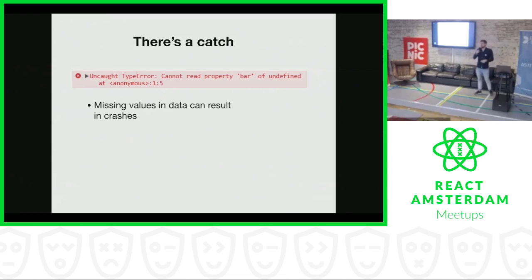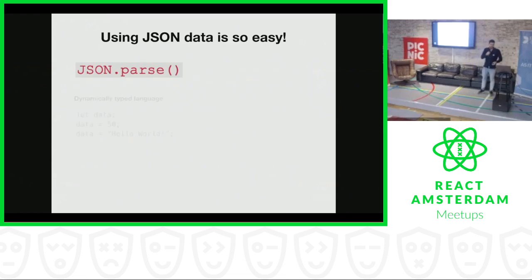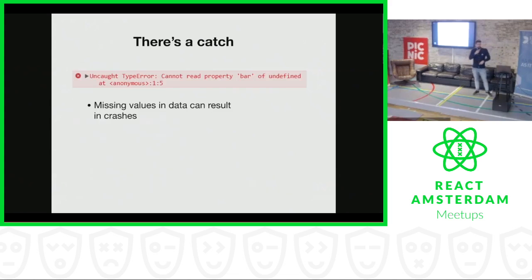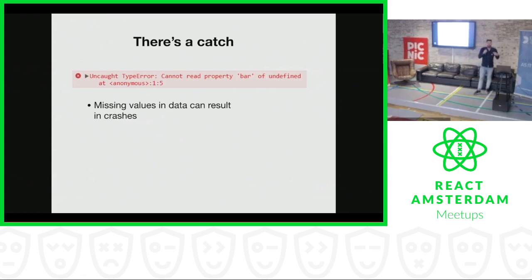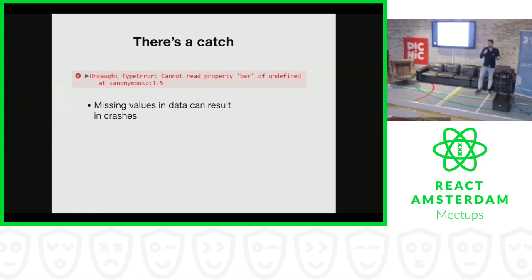But there's a catch — if you use the JSON.parse function, you can get an error later in your app. I think you've all seen this error before. It can happen if you try to access a property of an object that is actually undefined. And in React Native, if you don't catch this error somewhere properly, it can even crash your app, which you don't want of course.